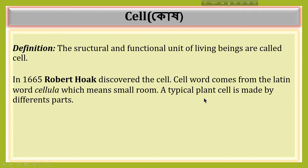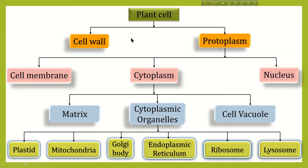A typical plant cell is made of different parts. A plant cell is mainly divided into two parts: number one, cell wall, and number two, protoplasm. Cell wall is the non-living part of the plant cell and protoplasm is the living part of the plant cell. Protoplasm contains three parts: cell membrane, cytoplasm, and nucleus. Cytoplasm is divided into three parts: matrix, cytoplasmic organelles, and cell vacuole.